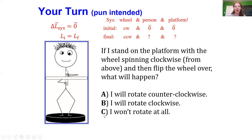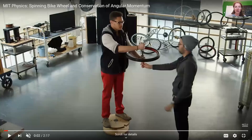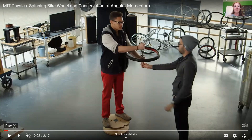Since I can't do this demo at home without probably falling off my chair, I'm going to show you a video from MIT — I'll put the link to this video in the slides. We have a person holding a bicycle wheel and standing on a platform just like we described, and this wheel is actually spinning clockwise as viewed from above.